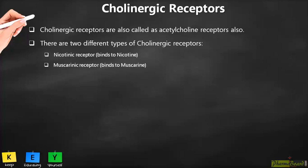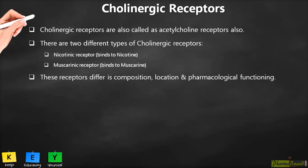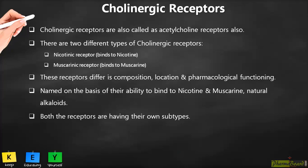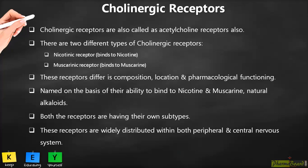Muscarinic receptors are named because they bind specifically to muscarine. Both receptor types differ in composition, location, and pharmacological function. Each receptor has several subunits. Nicotinic and muscarinic receptors are distributed throughout the peripheral and central nervous system in different locations, with different pharmacological functioning.